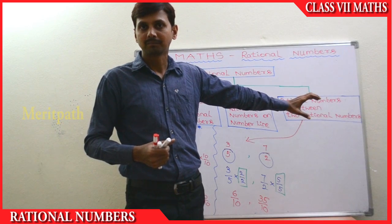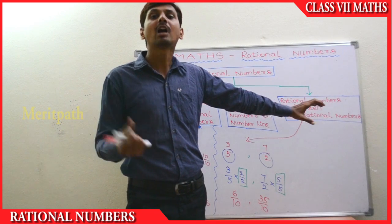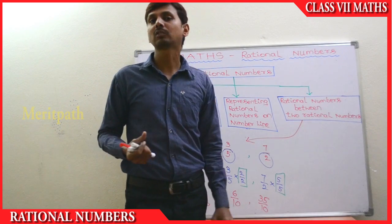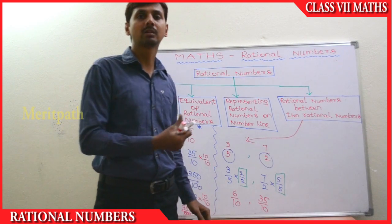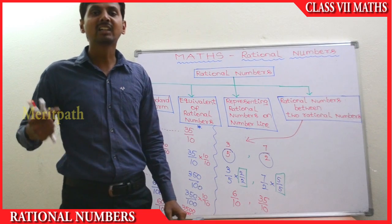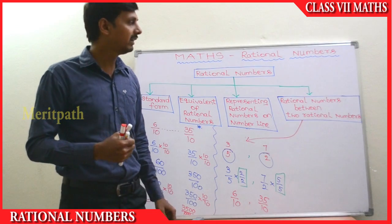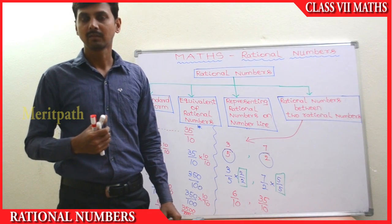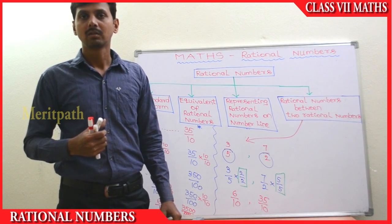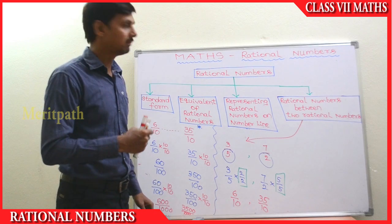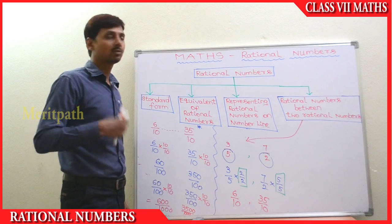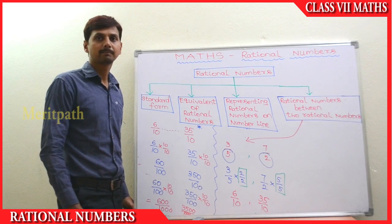Between two rational numbers, there are infinite rational numbers present. That means they are uncountable — we cannot count how many rational numbers are present between two rational numbers. This is the concept.